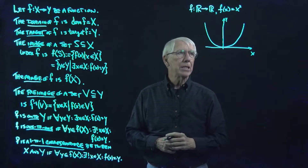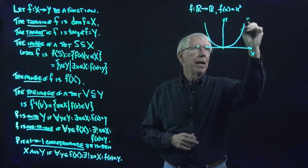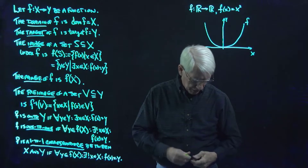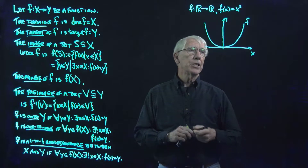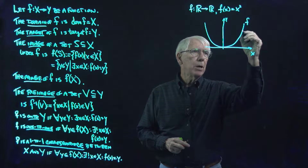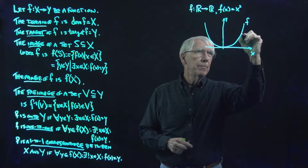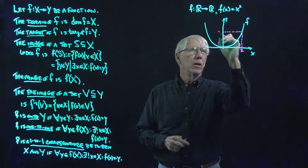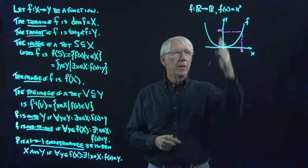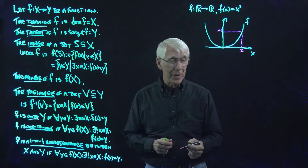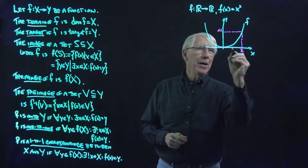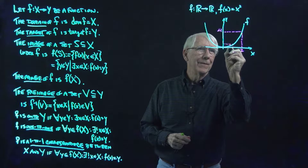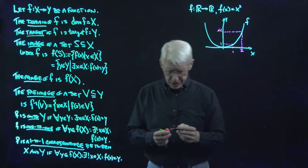So, x and y axes here. This is a graph of f — let me actually use some colors here. Let's suppose that this is 2 down here, so this is 4 over here. They're not on the same scale, obviously, on the two axes.